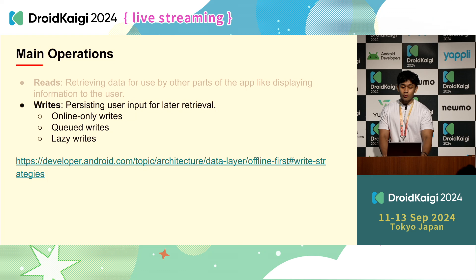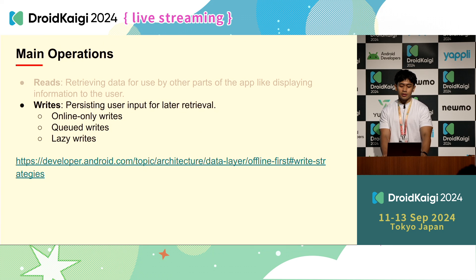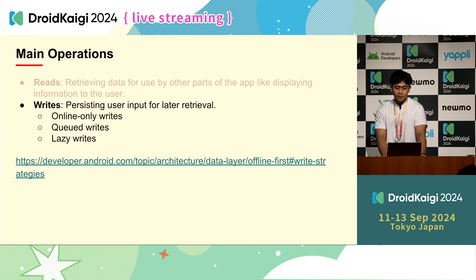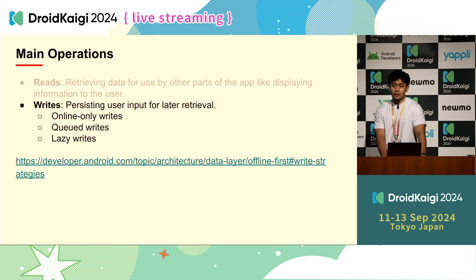Next is how we write the data. In offline-first apps, there are three strategies to consider based on your app requirements: online-only writes, queued writes, and lazy writes. I'm not going to talk in detail about all three — let's just see the code.